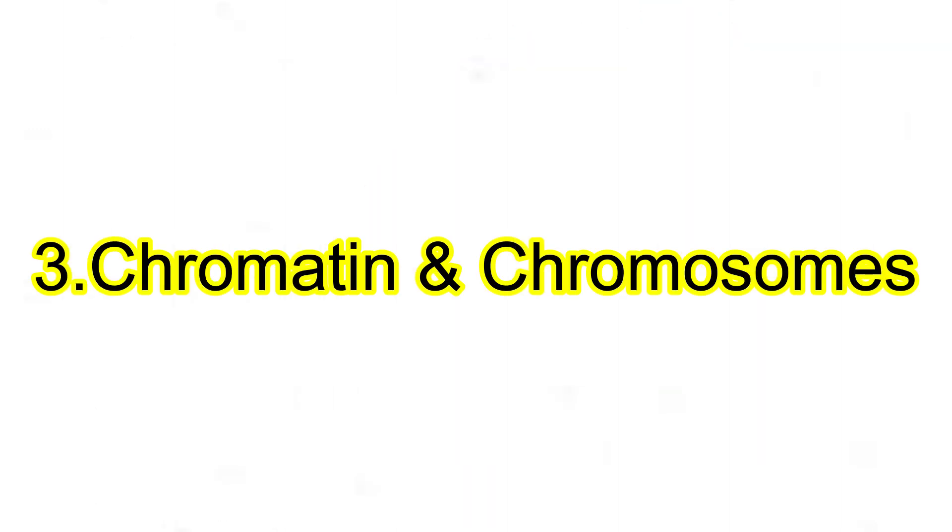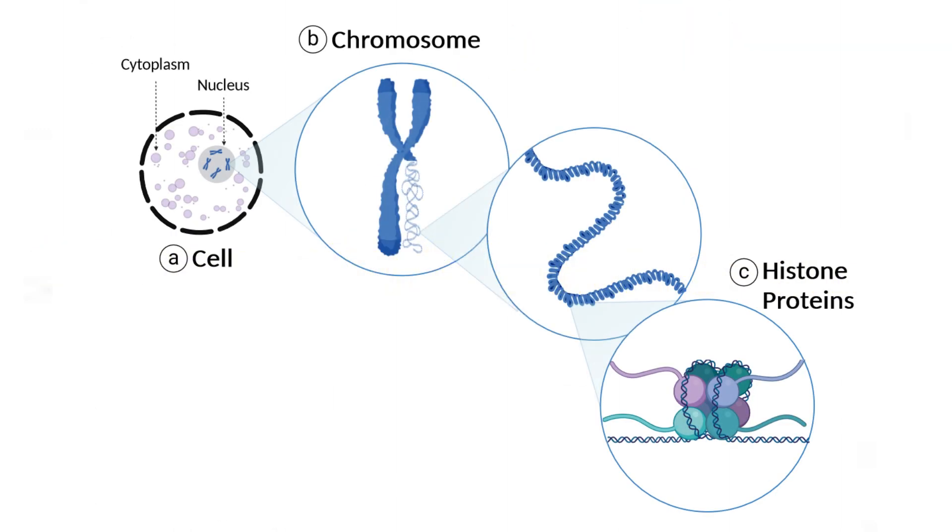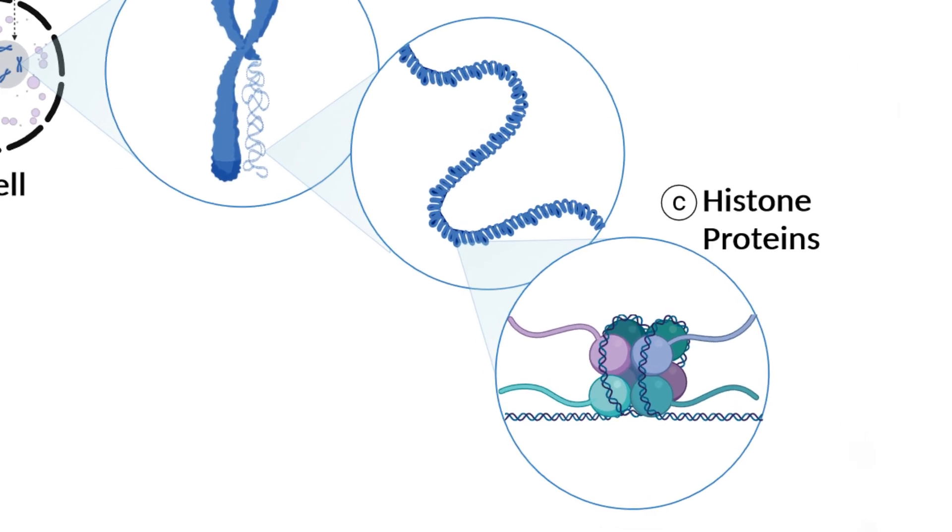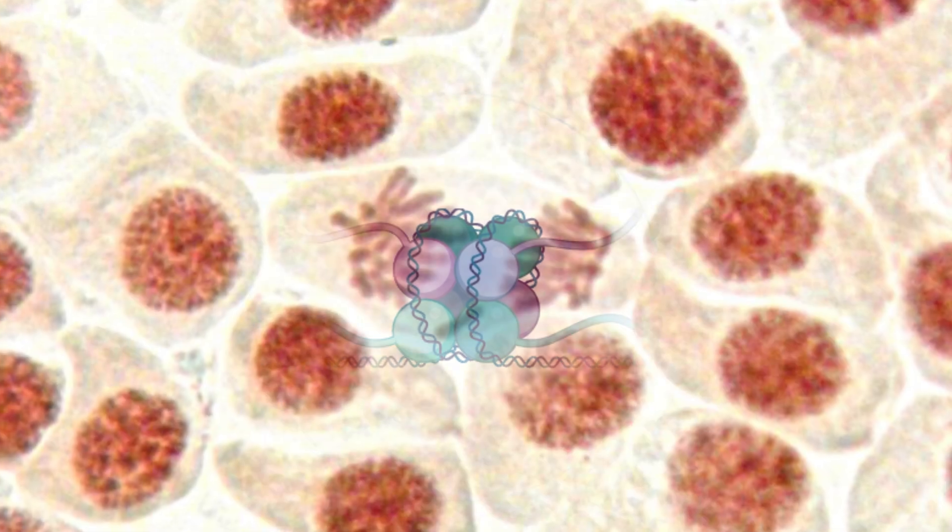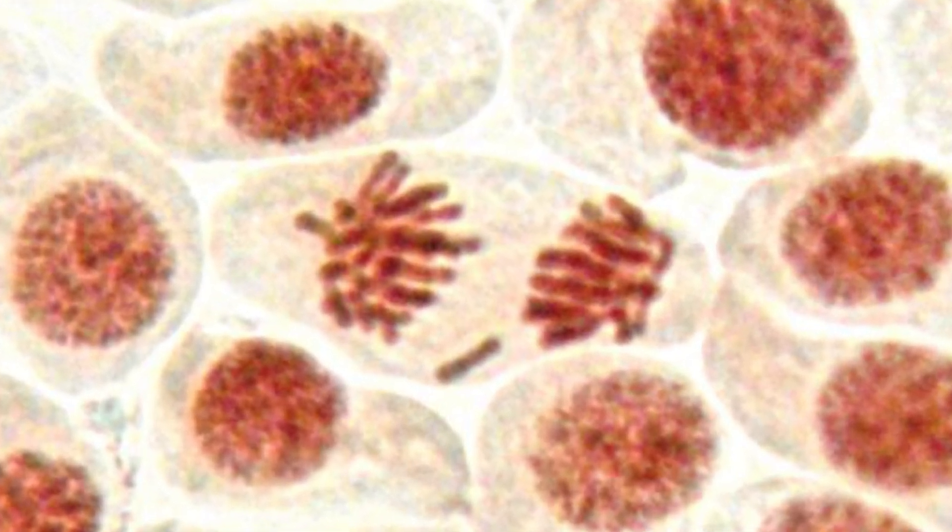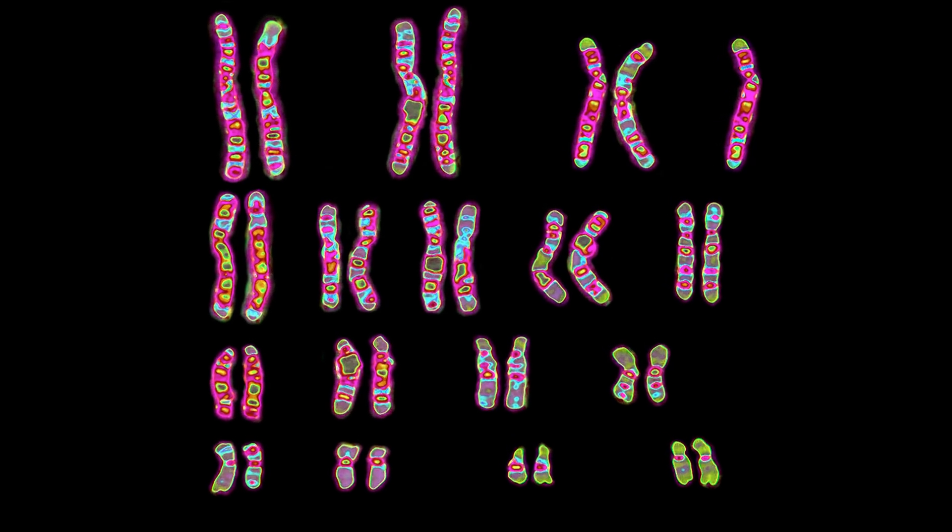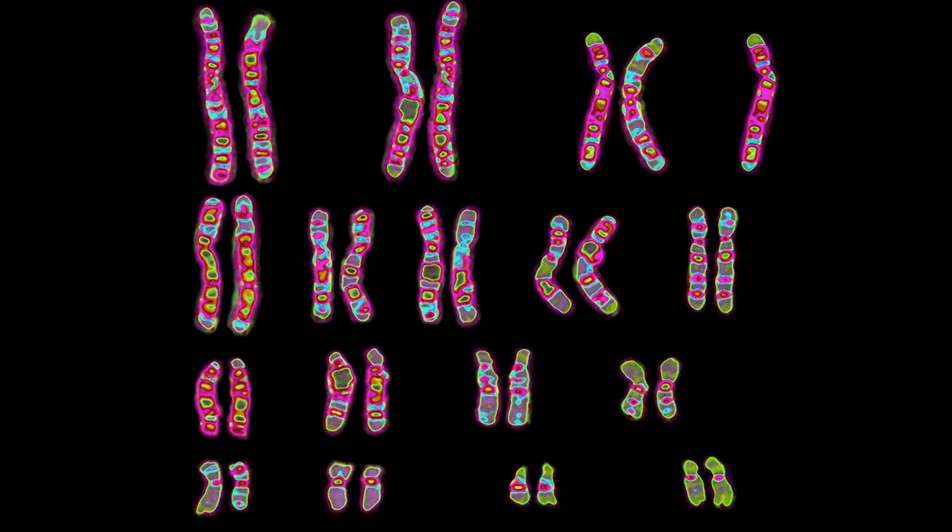Three, chromatin. The DNA inside the nucleus is packaged as chromatin, a mix of DNA and proteins called histones. When it's time for cell division, chromatin condenses into distinct chromosomes. In humans, that's 46 chromosomes, or 23 pairs.